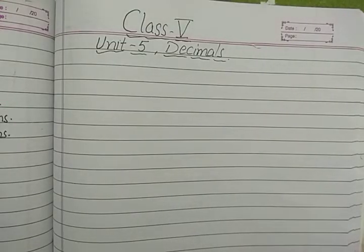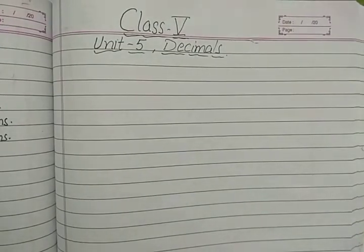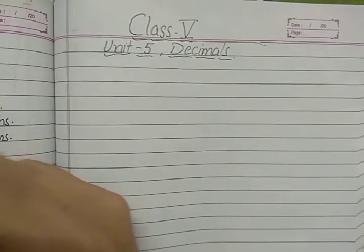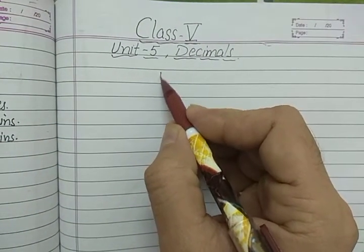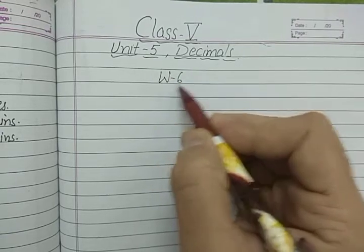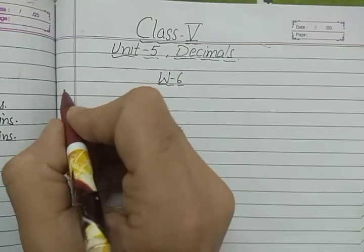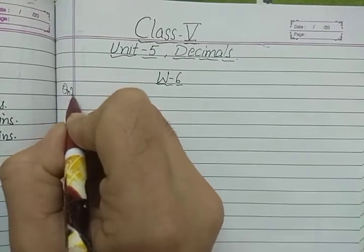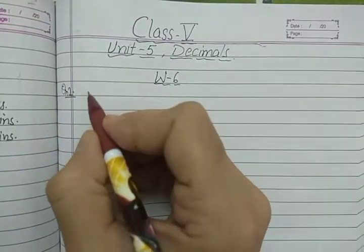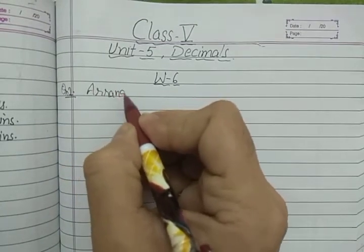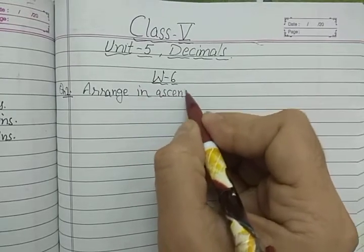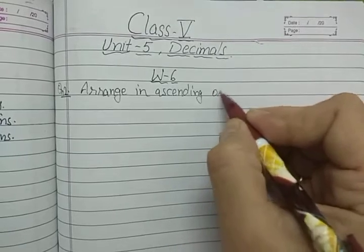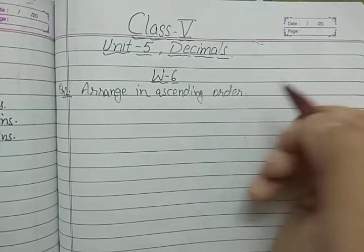Hello students. In the previous video we learned how to compare decimal numbers, and today we will arrange decimal numbers in ascending and descending order. We are doing worksheet number six of unit five. Question number one we have already done, so we'll start with question number two: arrange in ascending order.